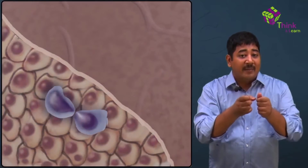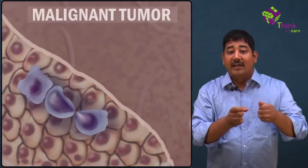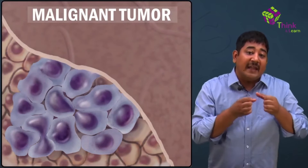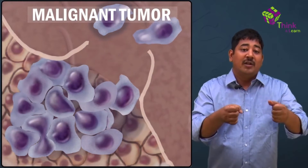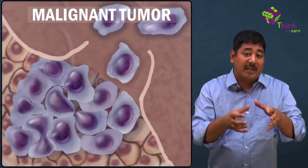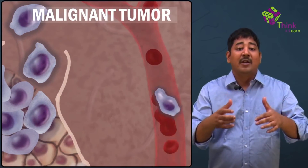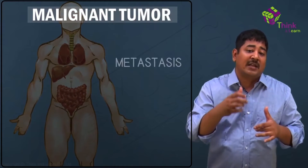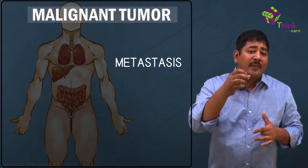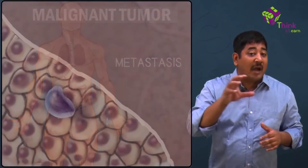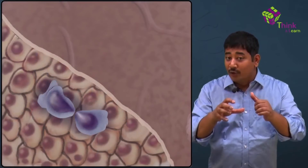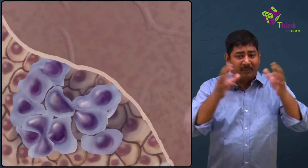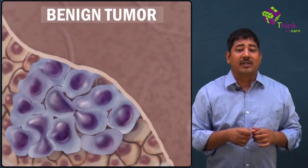Tumors can be malignant in that they can start to grow on top of each other and invade other nearby tissues when they run out of space. They can even use the bloodstream to reach distant parts of the body in a multi-step process called metastasis. Thankfully, some tumors don't do this — they are in fact inert or inactive and simply grow. These are benign tumors.